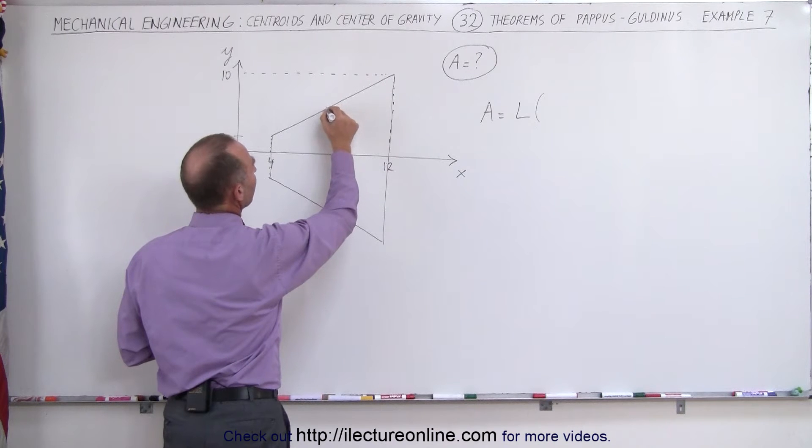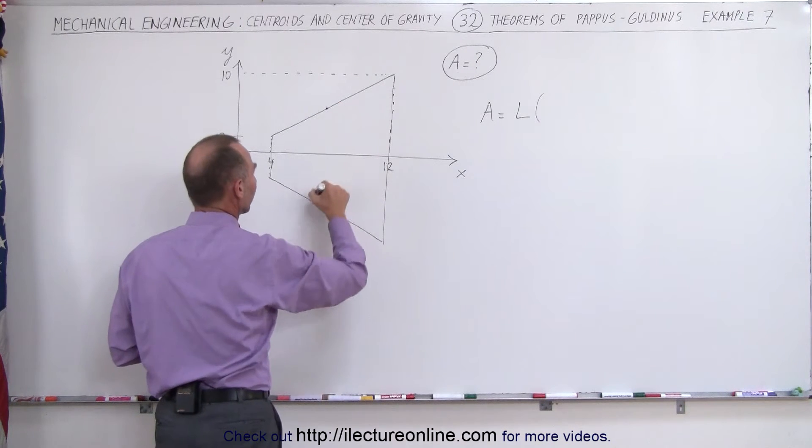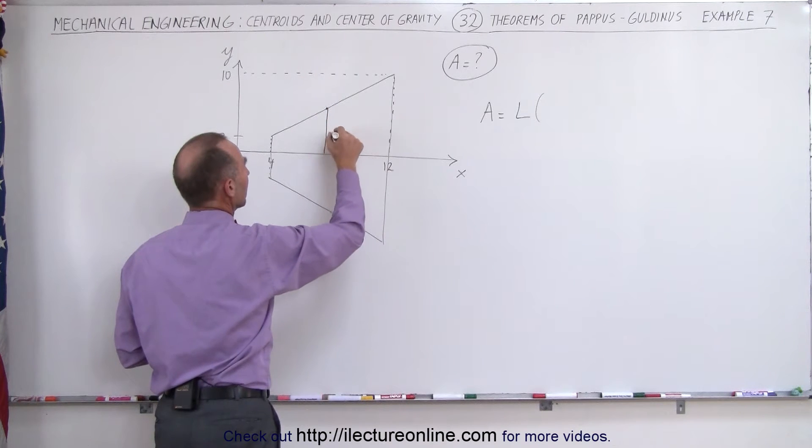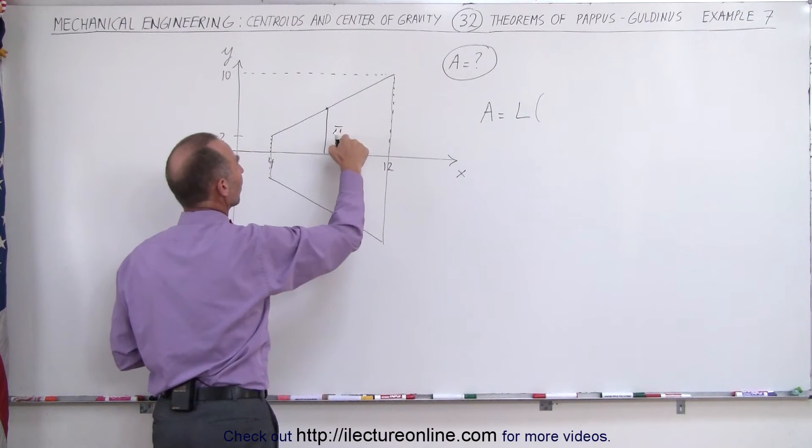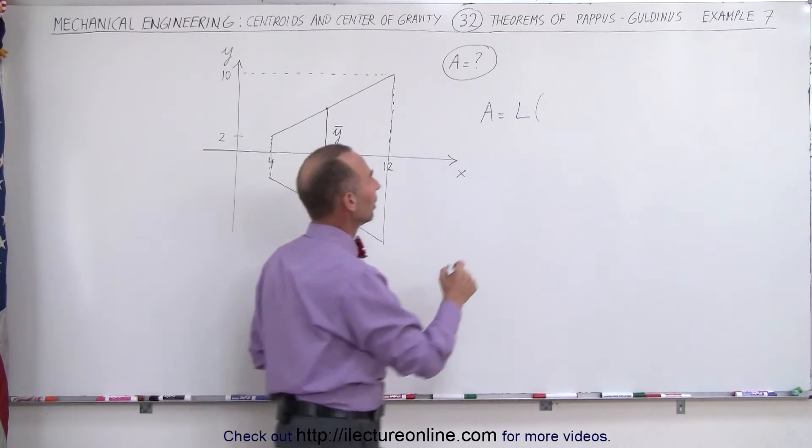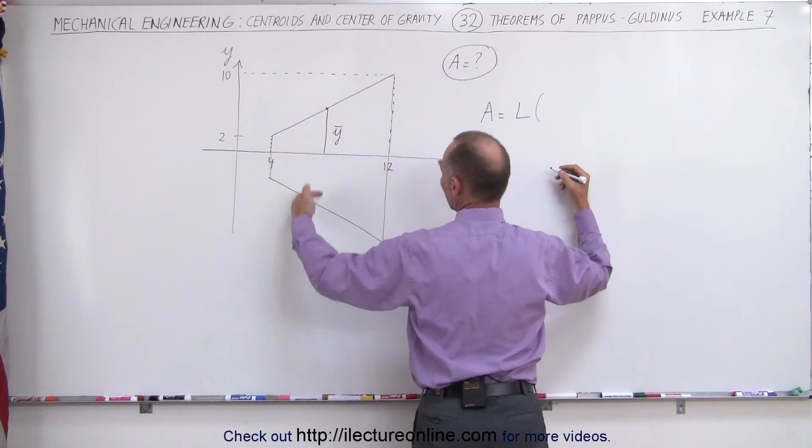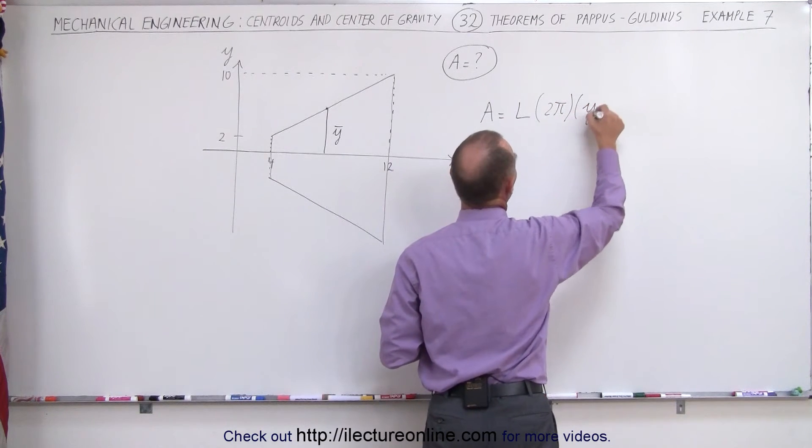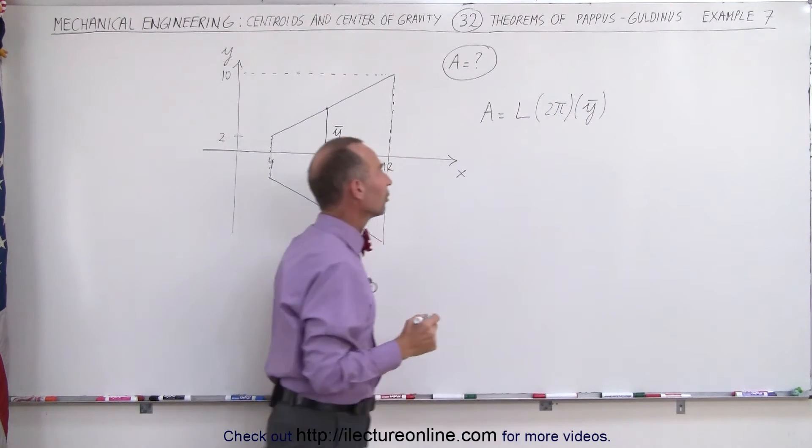The centroid would be right about here and of course it would then travel around like this. The radius of that would be the y-coordinate of the centroid of that line segment. And that distance traveled would be a circular path. It would be 2 pi times the radius of that path which is the y-coordinate of the centroid.